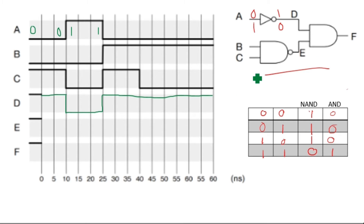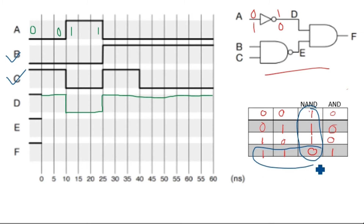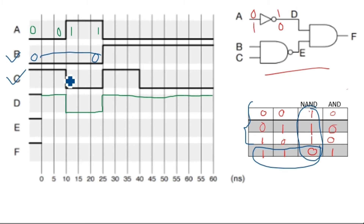Now let's move to E. We are going to use B and C as inputs to the NAND gate. Looking at the waveforms, B is zero initially and remains zero up to a certain value. From the NAND truth table, if any one input is zero you get output one. So since B is zero for this whole duration, we don't need to check C — E is one until the point where B becomes one.